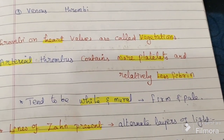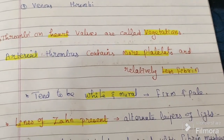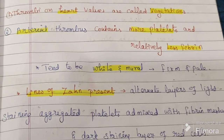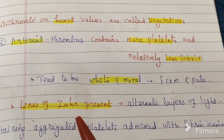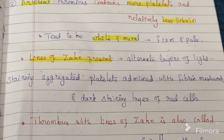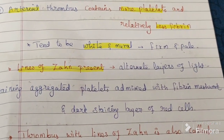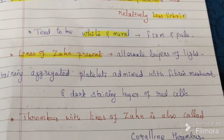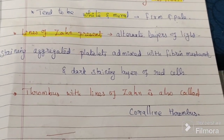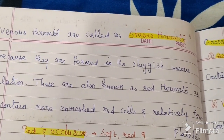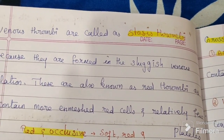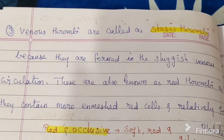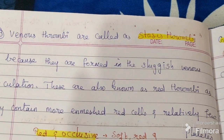Arterial thrombosis contains more platelets and less fibrin, so it appears white or pale in color. The lines of Zahn are present — that means platelets and RBCs alternate, giving a pattern of dark and light staining. This alternating pattern is called the lines of Zahn. Venous thrombi are also called stasis thrombi, associated with altered blood flow.